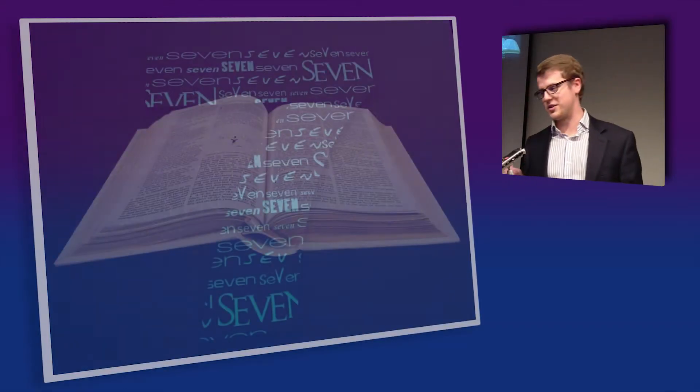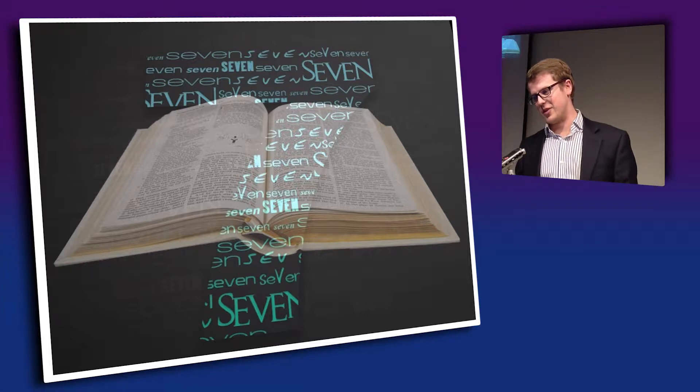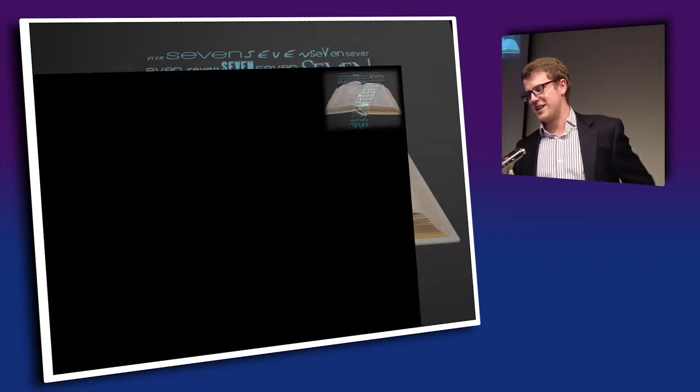The number seven — firstly, number seven itself, not just in the Bible. It's a prime number, the fourth prime number, and also a Mersenne prime. It's also a double Mersenne prime. It's quite a unique number; if you want to know the meaning of those properties, there are probably people in the room better qualified to explain them than I am.